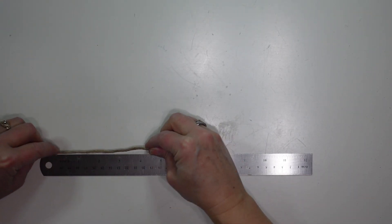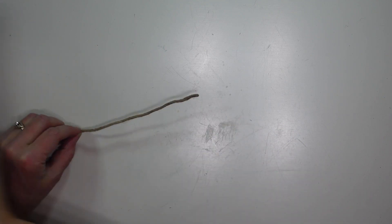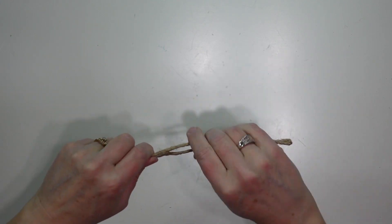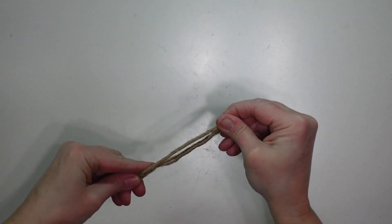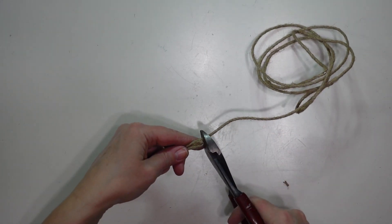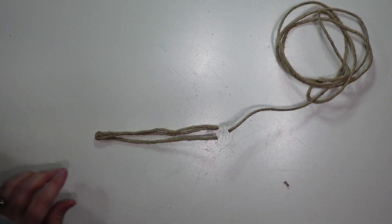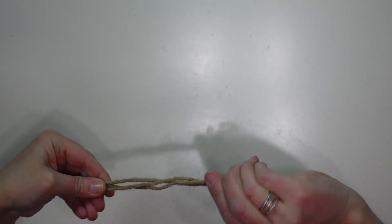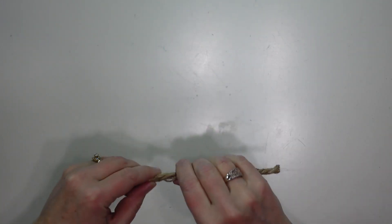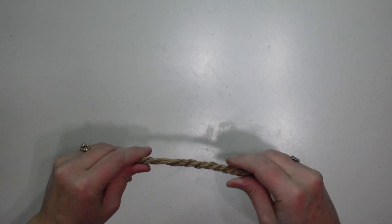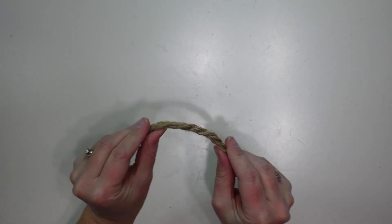Next I am going to make some handles for my tray. So I am going to take my wired jute and I am going to measure 6 inches and fold it over. And then I will fold it over again so that I have 3 strands that are 6 inches long. And then I am going to cut it off and then I will twist those together tightly and bend it kind of in a little rainbow shape. This is going to make my handle and I will make 2 of these.